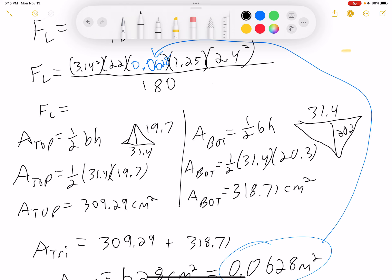I'm going to put 3.14 squared times 22 times 0.0628 times 1.25 times 2.4 squared divided by 180 all in one line. And I get a value of 0.54 newtons. And that is my answer.